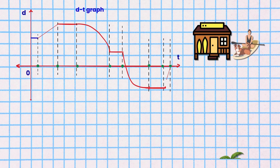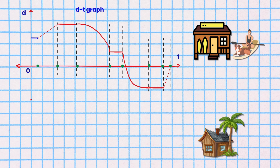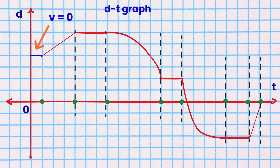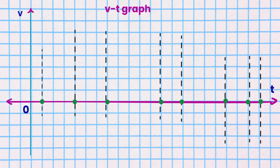Segment 1. Mole and Electron start their journey at a paddle board shop some distance away from Mole's home, where they wait to get their paddle board repaired. They have zero velocity. Here are the axes for the VT graph with the dashed vertical lines matching the DT graph. The zero velocity is shown as a horizontal line on the time axis.